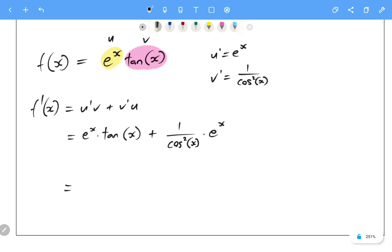and not much cleanup needs to happen here. In fact, we just get e to the x tan of x, which is pretty plain, plus e to the x on cos squared of x. And there is our final answer.